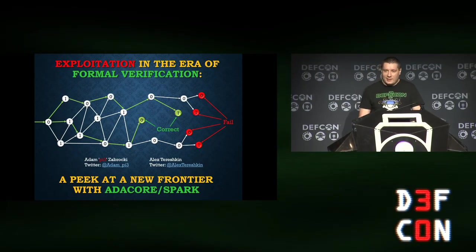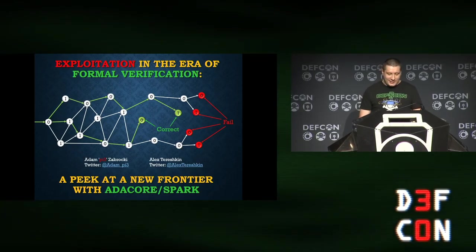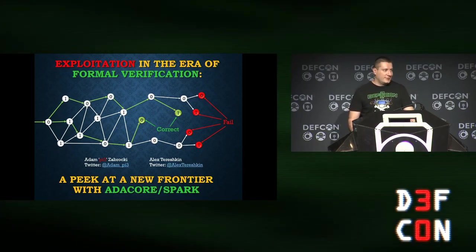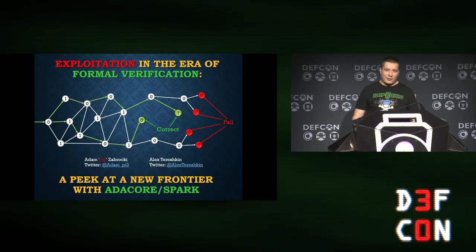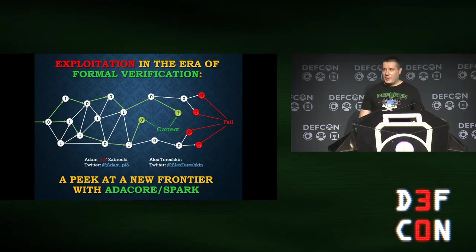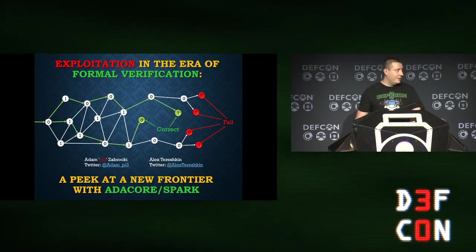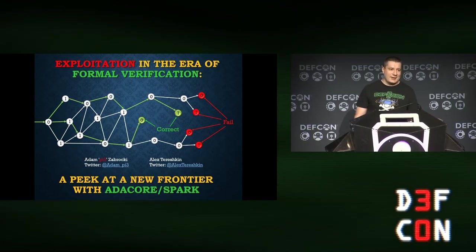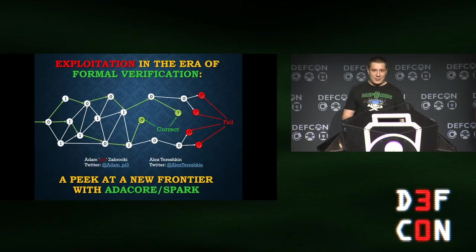Some folks already approached us and asked what is this picture here. The answer is pretty simple — there is no logic behind it. It's just a kind of visualization that in any software you might have a wrong path, correct path, failed path, and some paths are correctly verified, while some are wrong or undefined behavior. This picture looks cool, that's why we decided to use it. If you find any meaning, let me know.